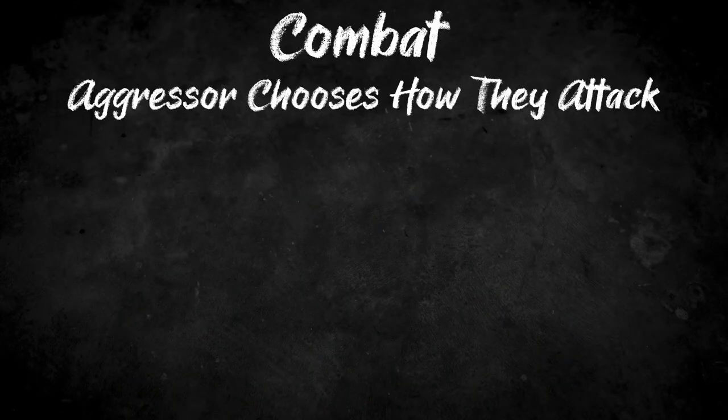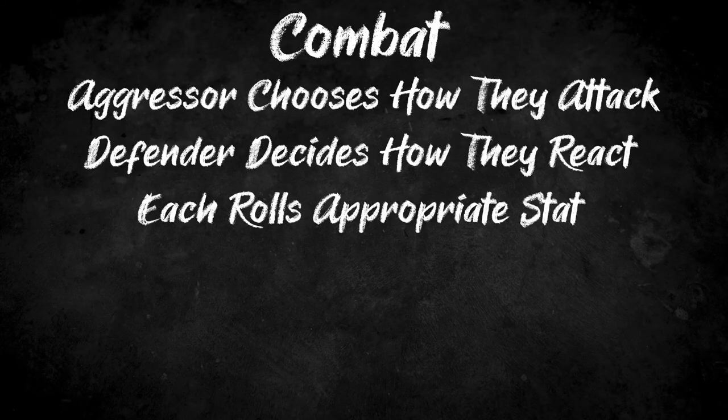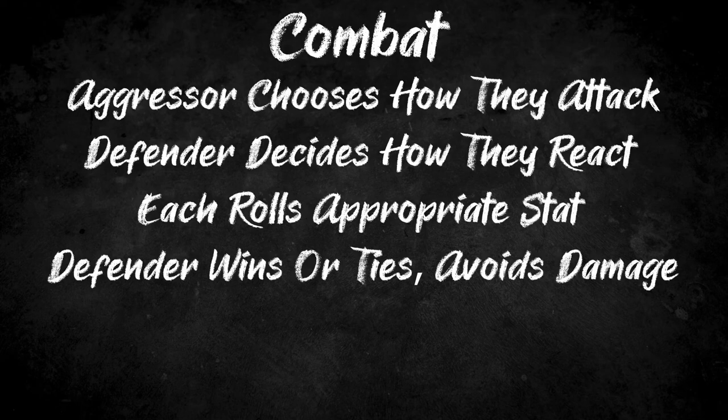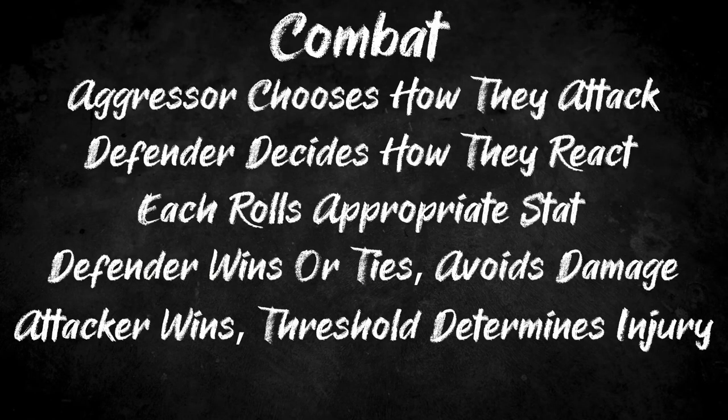The aggressor will state what they are doing and then make their roll. Meanwhile, the defender will state what they are doing to try to mitigate that roll. This could be a fight for a parry maneuver, a flight if they are attempting to get out of the way, or a brawn if they are trying to tank the blow. They could also try more unique approaches — charm or brains to get out of the situation. Both characters roll that statistic and the results are compared. If the defender meets or beats the attacker's roll, they have successfully defended and get to narrate the outcome.